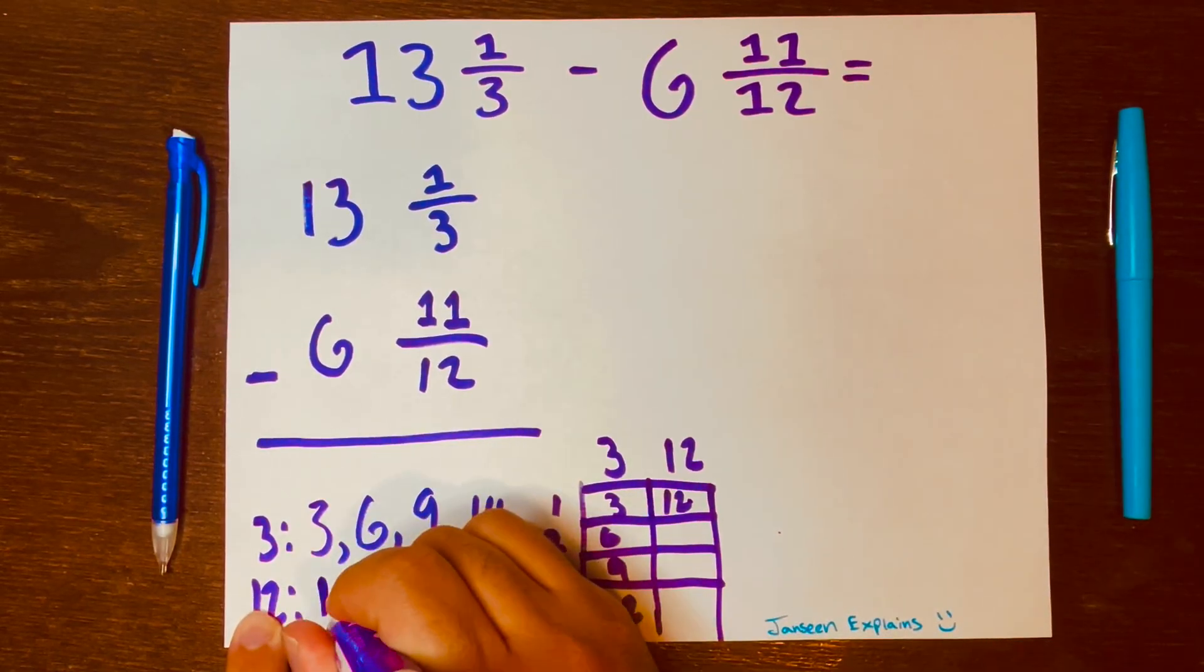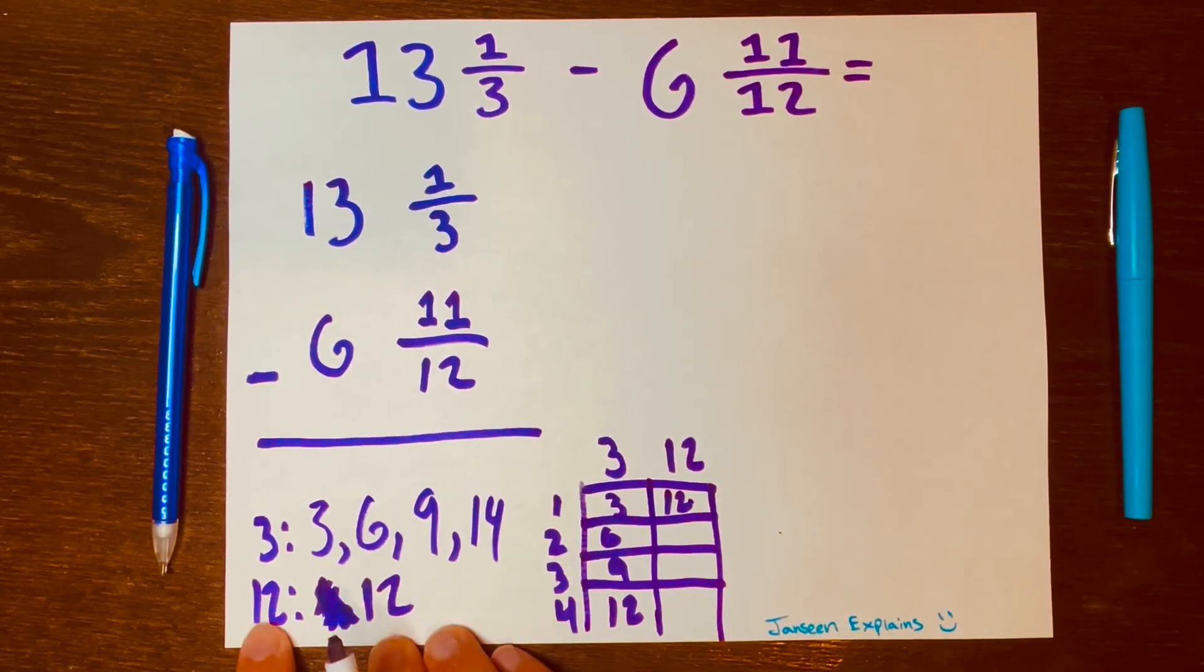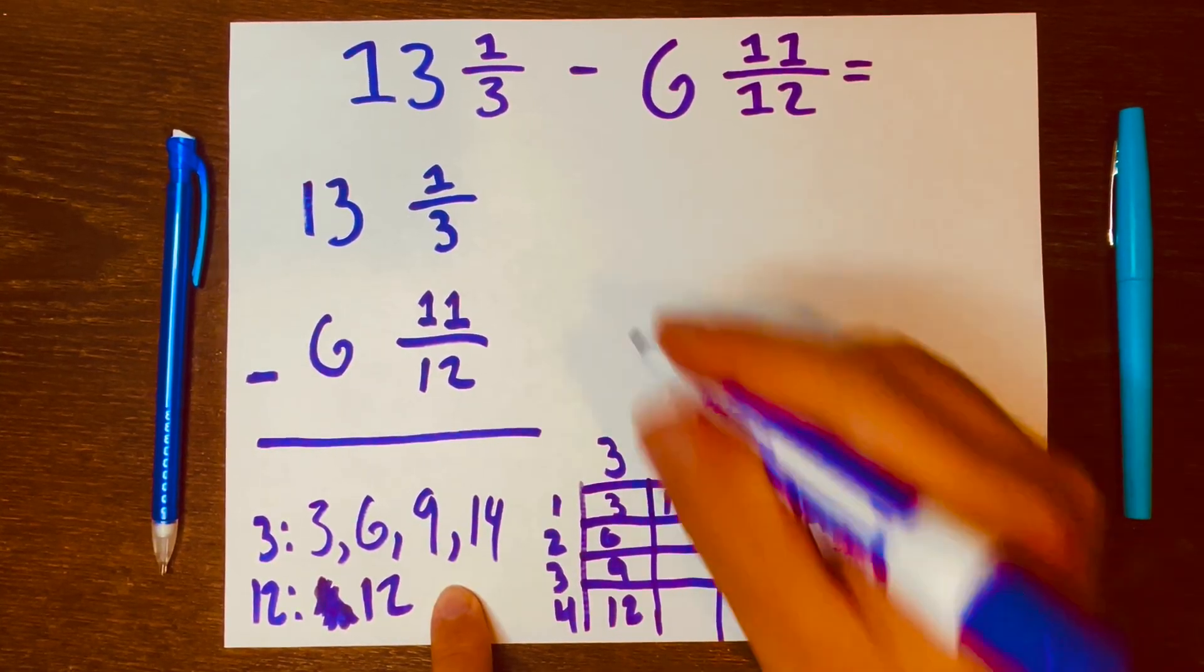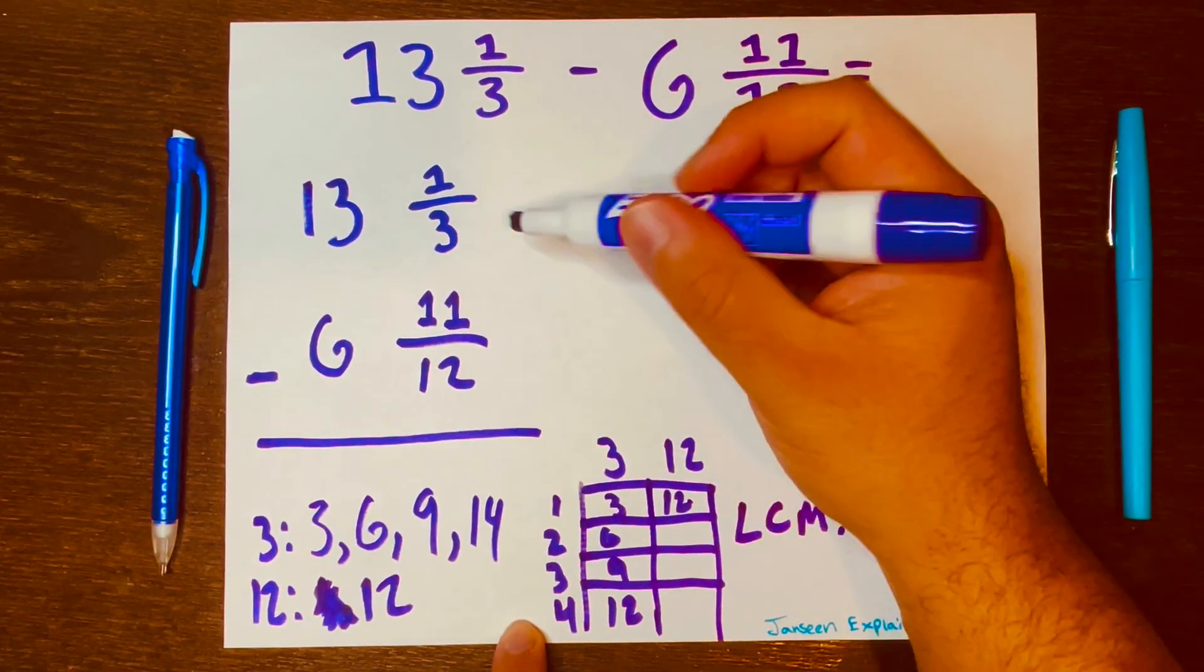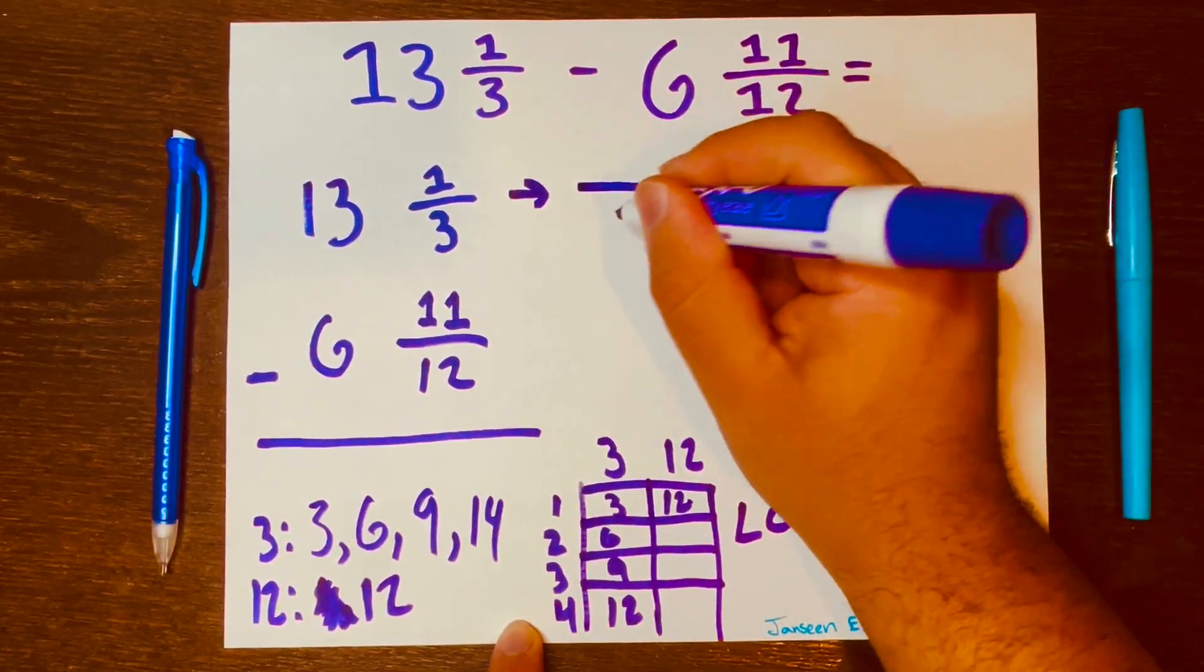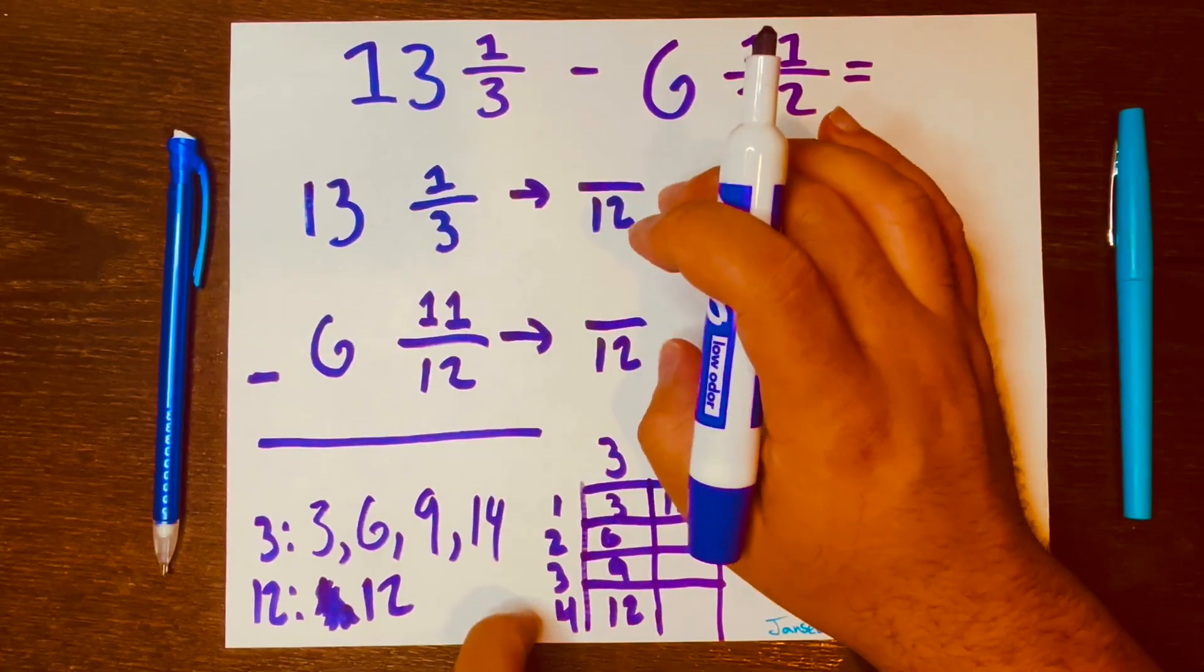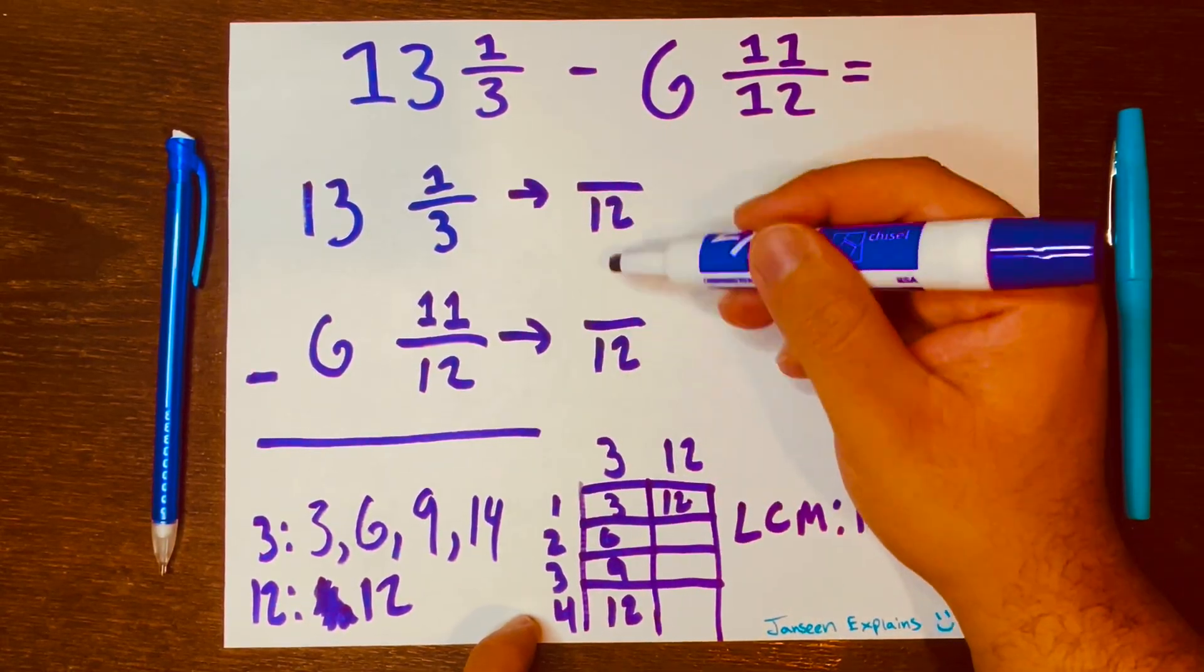And I'll write that here, 12. Lowest common multiple is 12. So we're going to write that 12 and the reason why we're doing this and finding the lowest common multiple is because we want to make equivalent fractions for these fractions. So the equivalent of this fraction, we're going to write 12 for the denominator. And for this fraction, a 12 for the denominator. So now we have two equivalent fractions.